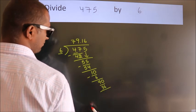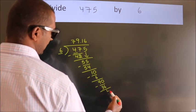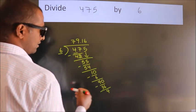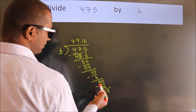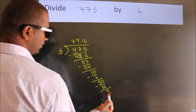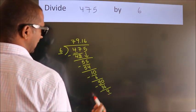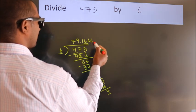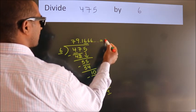Now we subtract. We get 4. Now you observe, we had 4 here and we got 4 again. That means this number keeps on repeating. So this is our quotient.